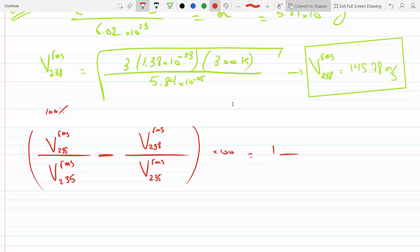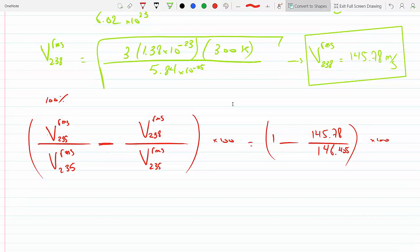In percent, this is the 100% one and this is whatever percent this out of this. If I subtract them, I get the percentage difference after I multiply the whole thing by 100. So here I would get 1 minus 145.78 divided by 146.405, multiply this by 100.